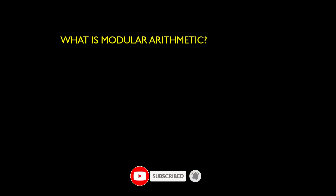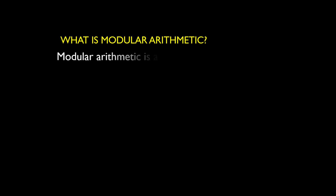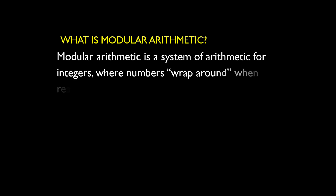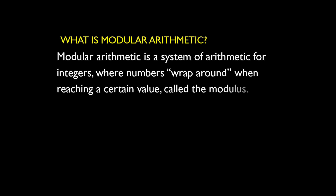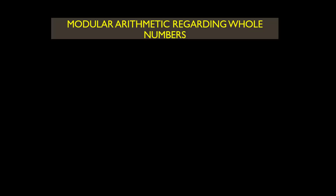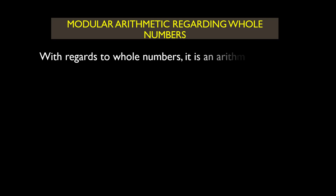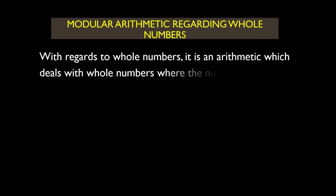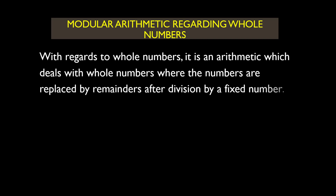What is modular arithmetic? Modular arithmetic is a system of arithmetic for integers where numbers wrap around when reaching a certain value called the modulus. With regards to whole numbers, it is an arithmetic which deals with whole numbers where the numbers are replaced by remainders after division by a fixed number called the modulus.